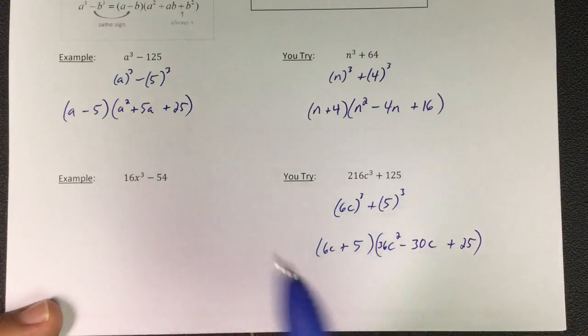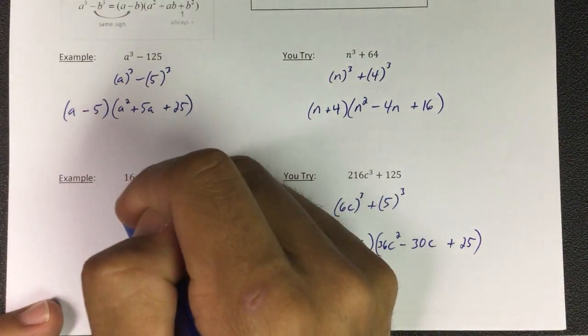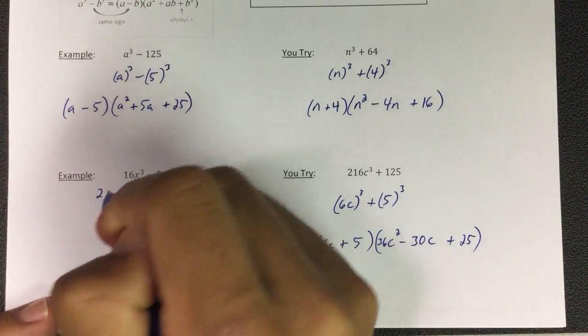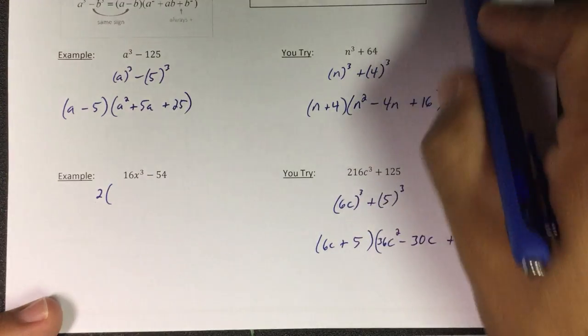But I'm going to tell you what happened first. First of all, you have to divide out the 2. If I divide out the 2, now I have a difference of cubes. Because 16, you can see, is not on my list.